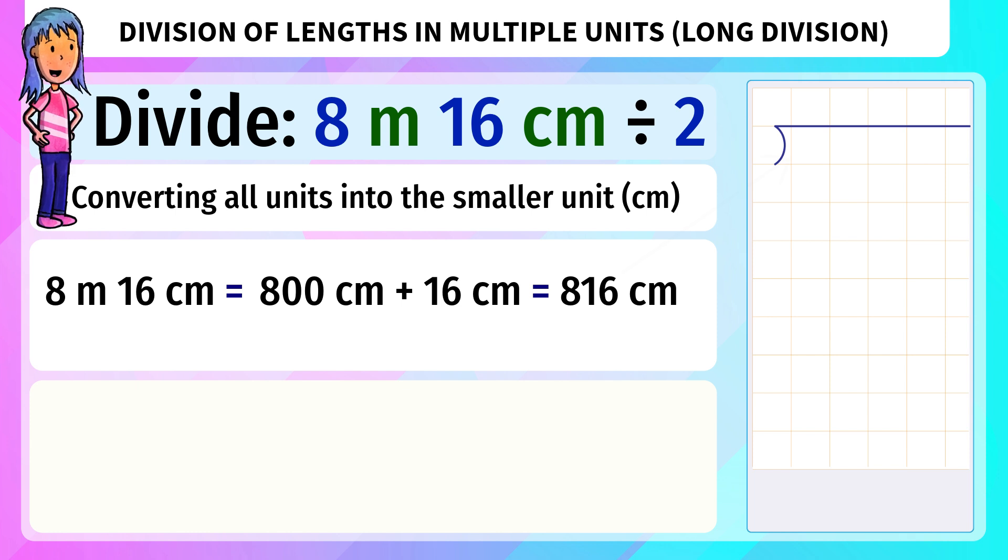Now we can divide 816 centimeters by 2. Divisions involving single units are same as normal long divisions. Only, we add the unit in the end.